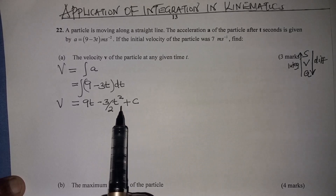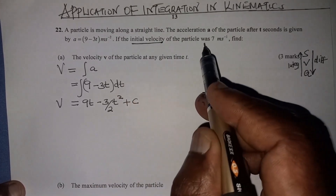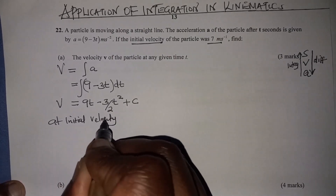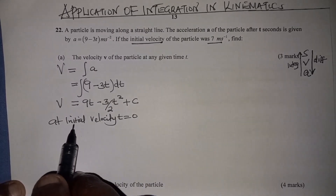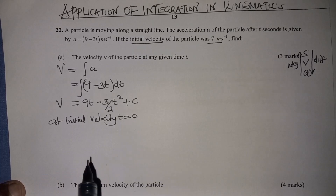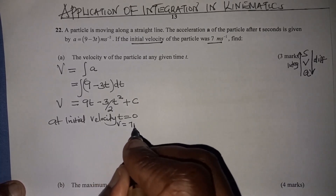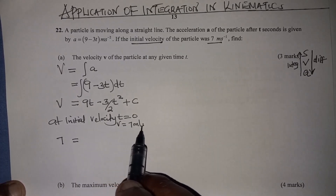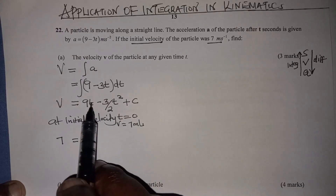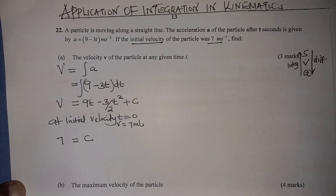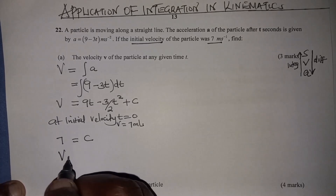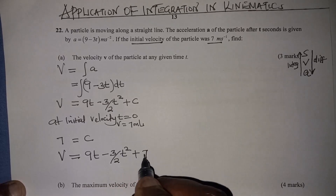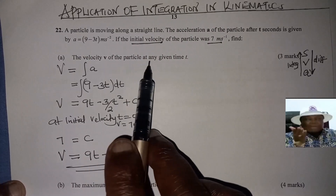Now we need to get the constant. We're given the initial velocity of the particle was 7 meters per second. At initial velocity, time will be 0. So we substitute velocity with 7 and t with 0, which gives us c equals 7. So the expression for velocity is v equals 9t minus 3 over 2 times t squared plus 7. That is the velocity of the particle at any given time t.